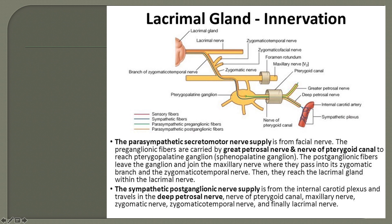You need to know about the innervation of the lacrimal gland. The lacrimal gland is a content of the orbit. The ophthalmic nerve enters posteriorly through the superior orbital fissure — it is the V1 division of the trigeminal nerve — with three divisions: frontal, lacrimal, and nasociliary, through which it enters the orbit.